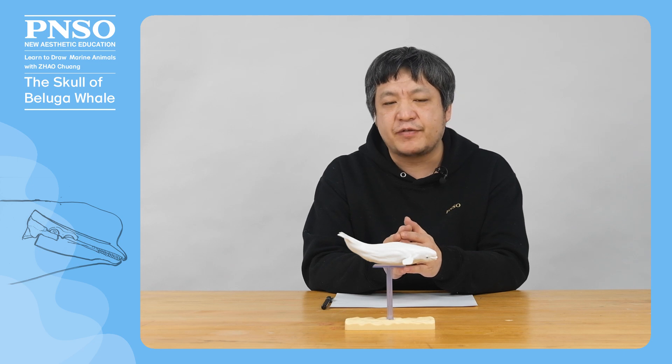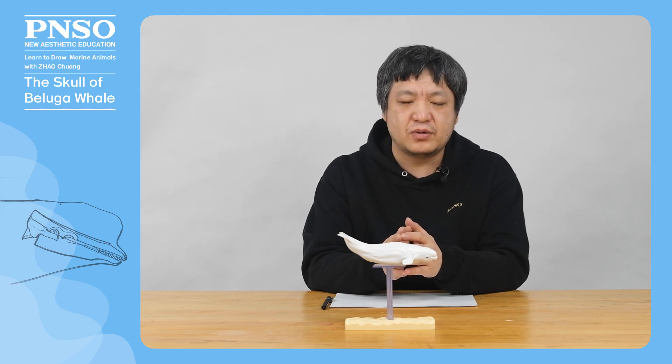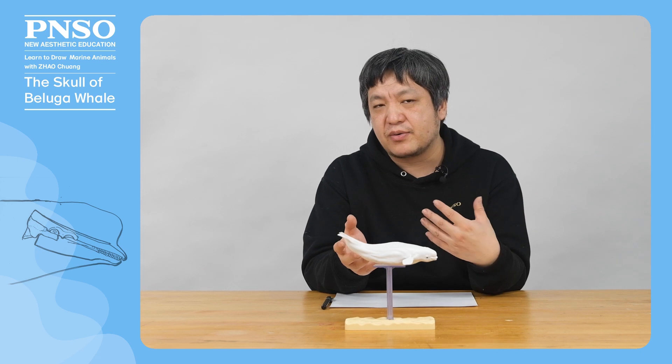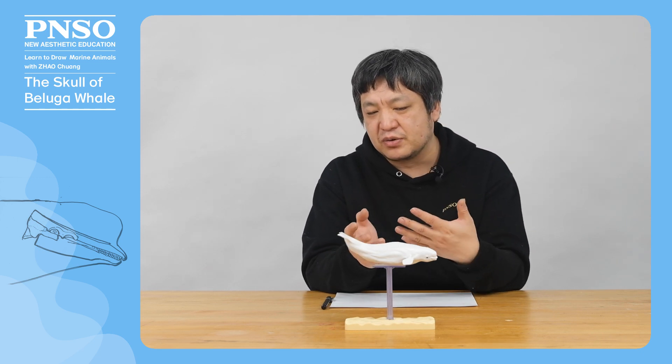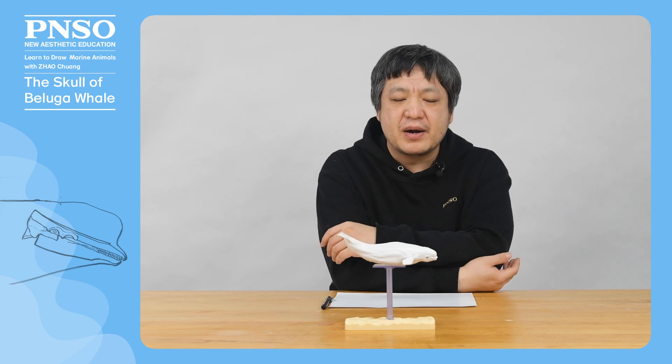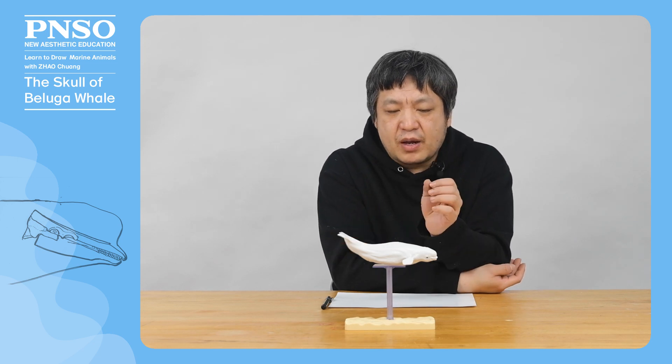The skull of the beluga whale is slender and elongated, which is quite different from its round head. When drawing, we should pay attention to the relationship between its skull and the soft tissue wrapped outside.